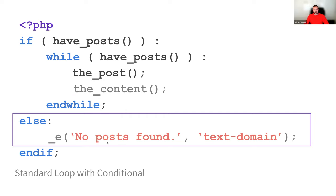If we didn't have any posts in the first place, we go into the else statement, and we have code outputting 'no posts found.' The text domain would be specific to your theme or plugin's text domain. The _e function is a WordPress function that translates this text into whatever language based on the text domain and outputs it — 'e' stands for echo, and the underscore indicates translation. So if we don't have posts, we output a message for that.